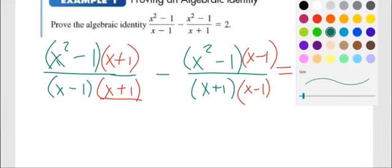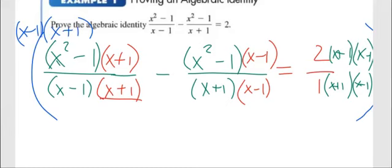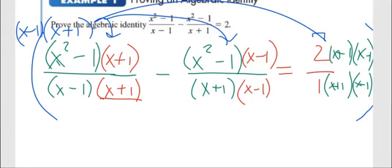If you multiply the entire equation by that denominator, x minus 1 times x plus 1, we're multiplying this, we're multiplying this, we're multiplying this. What happens to all those denominators? Whoosh! Whoosh! That gets rid of all those.